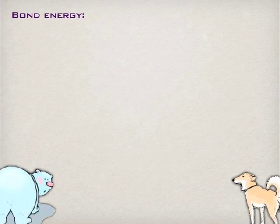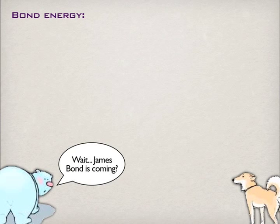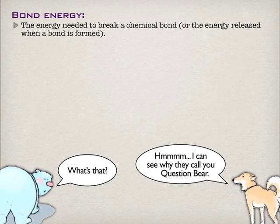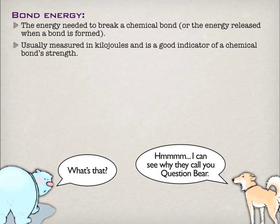So we measure that with bond energy — not James Bond, but a measurement of the strength of a bond. Depending on your perspective, this could be the energy released when a bond forms, or how much energy it takes to break a chemical bond. It's really the same thing because energy must be conserved either way. This is usually measured in kilojoules per mole — we'll get to the mole a little later. A higher bond energy means it takes more energy to break, so the bond is more stable.